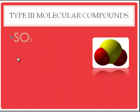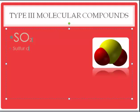SO2 is a gas found when sulfur is burning. You can smell it during the 4th of July — when it's concentrated, it smells quite bad. Its name would be sulfur dioxide. SO2, sulfur dioxide.